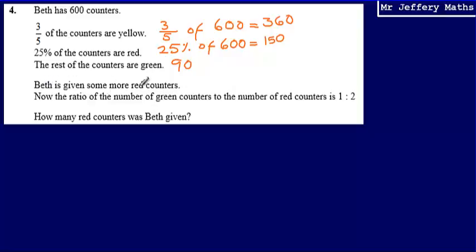We're then told that Beth is given some more red counters, so that the ratio of the number of green counters to the number of red counters is 1 to 2. So at the moment, we've got green as 90 and red as 150.